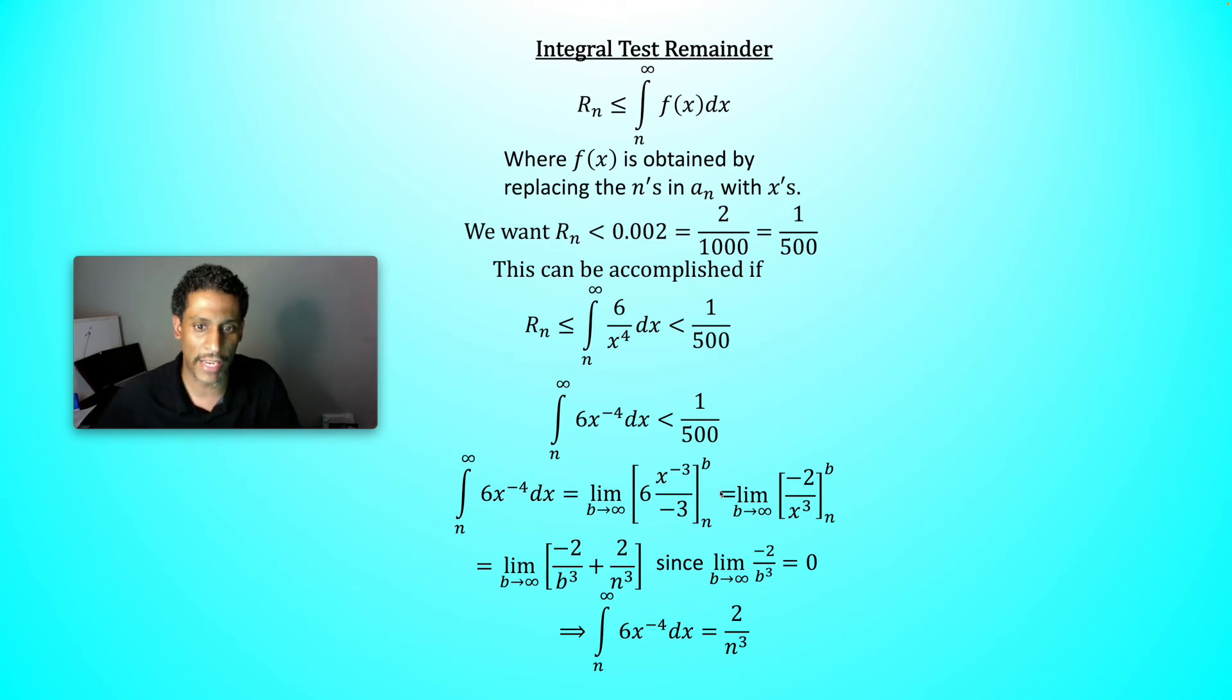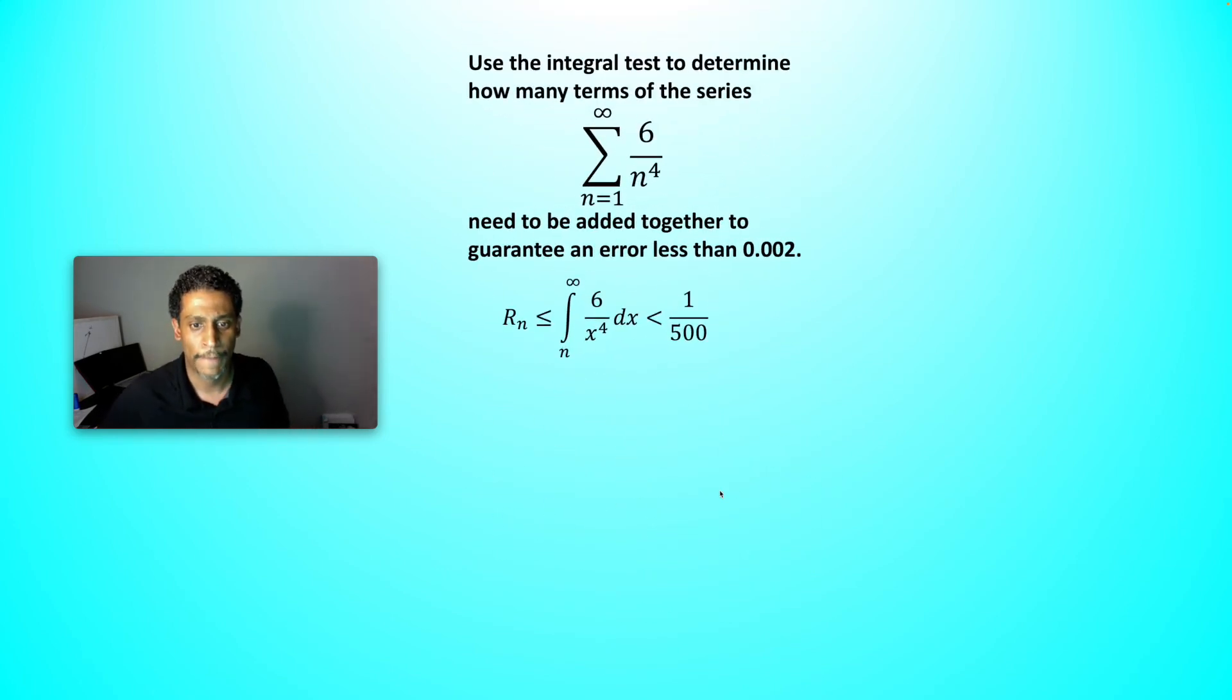So if the remainder is supposed to be less than that integral, then we have a way to represent that integral now. 2 over n cubed. We can replace the integral with 2 over n cubed. And now we want 2 over n cubed to be smaller than 1 over 500. Cross multiply.